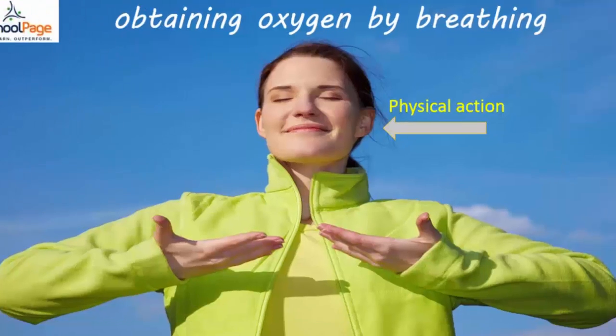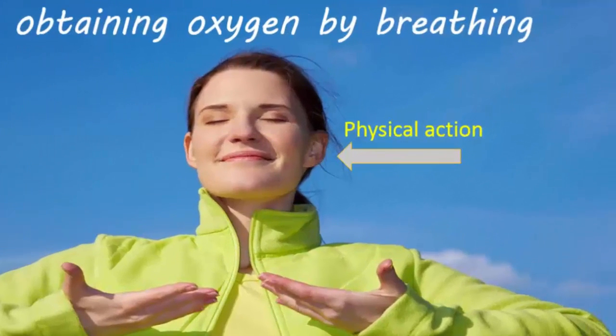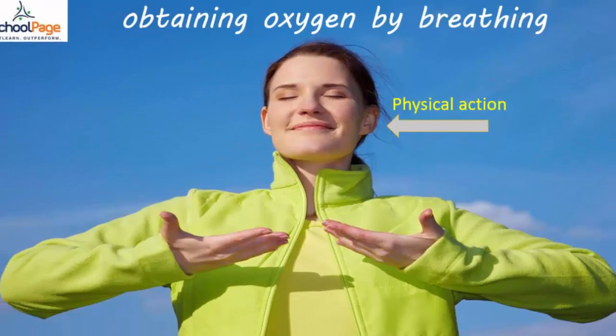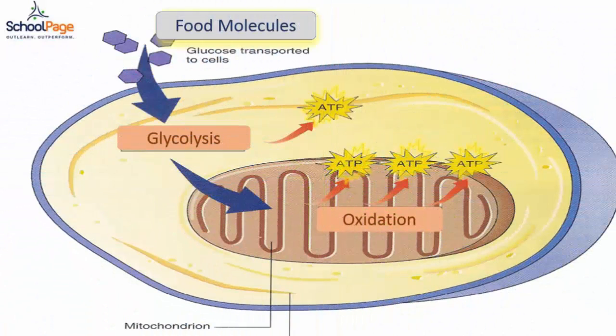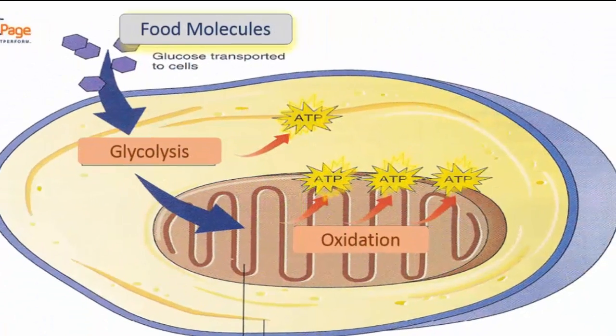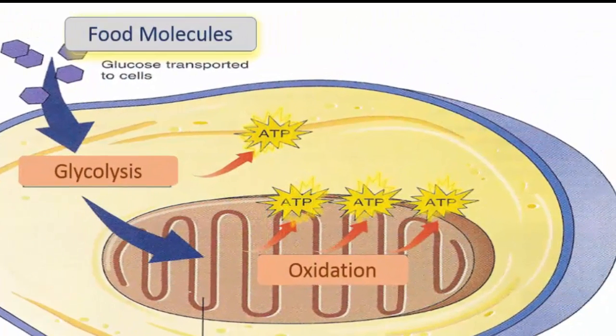Obtaining oxygen by breathing is a physical action, wherein we breathe air in and out of lungs. Obtaining energy by breaking down food occurs in the mitochondria of the cell.